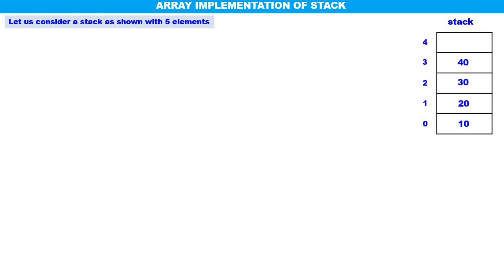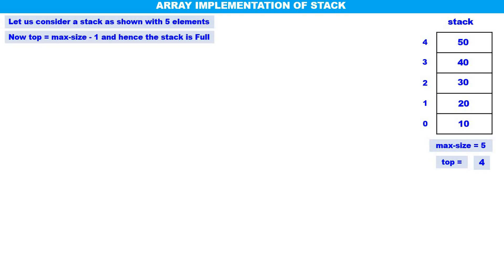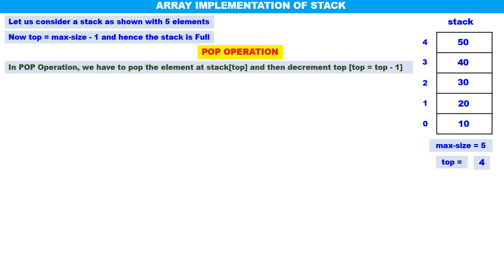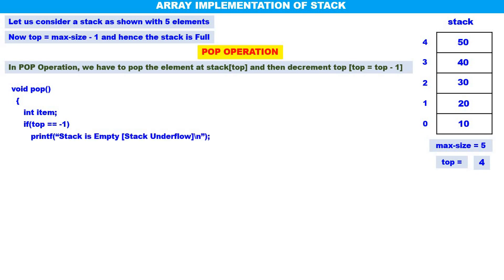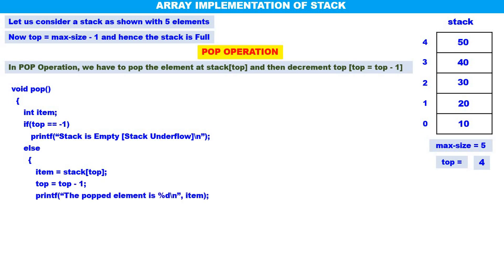Now let us see the pop function. The stack has five elements: 10, 20, 30, 40, 50. Max size is 5, top is equal to 4 — the stack is full. In pop operation, we pop the element at stack of top and then decrement the value of top. First check: if top equals minus one, print stack is empty — stack underflow. Otherwise, take the element: item equals stack of top, then decrement top, and display the deleted element.